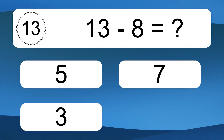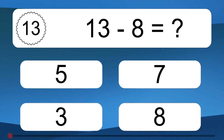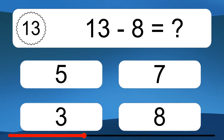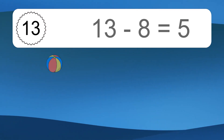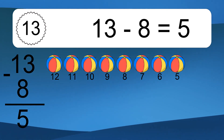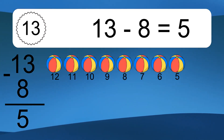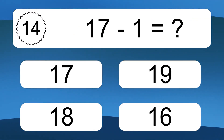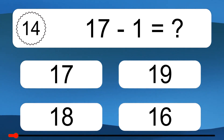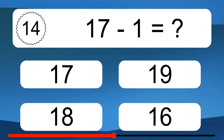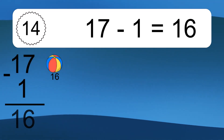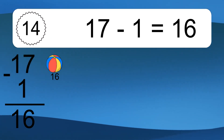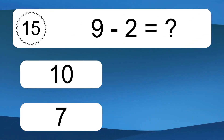13 minus 8 equals what? 13 minus 8 equals 5. Let's count it: 12, 11, 10, 9, 8, 7, 6, 5. 17 minus 1 equals what? 17 minus 1 equals 16. Let's count it: 16.